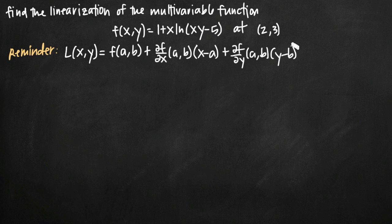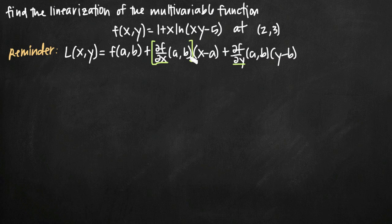We have the equation for the linearization of the function, which is the same equation used to find the linear approximation of the function. All this formula asks for is the partial derivative of f with respect to x and the partial derivative of f with respect to y, both evaluated at the point (a,b). We plug those in, leave x and y as they are, plug in the point for a and b, and plug it into our original function to get f(a,b) as well.